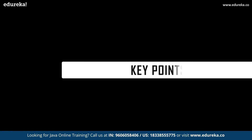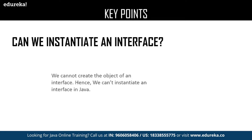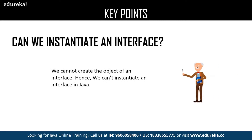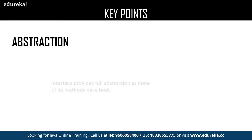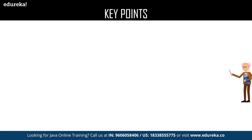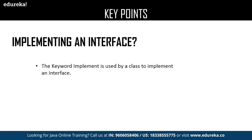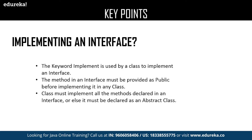Let us discuss the key points about Java interfaces. First: can we instantiate an interface? We cannot create an object of an interface, hence we cannot provide instances in an interface. Next, abstraction: the major advantage of interface is abstraction because none of the methods declared in an interface have a body. Next, implementing an interface: the keyword 'implements' is used in a class to implement the methods of an interface. The method in an interface must be provided with public as the access modifier. Methods declared in an interface are also considered public. A class must implement all the methods declared in an interface, or else it must be declared as an abstract class.